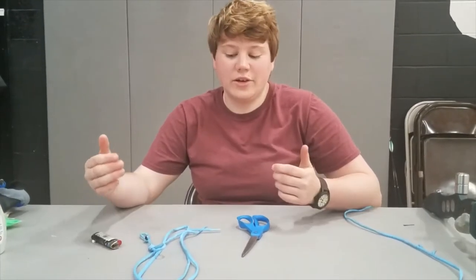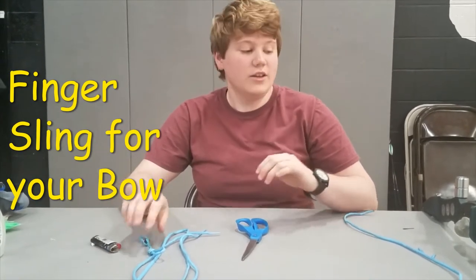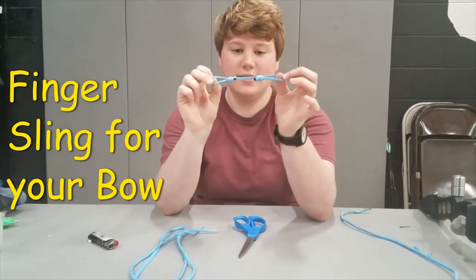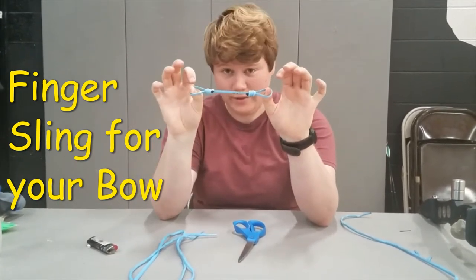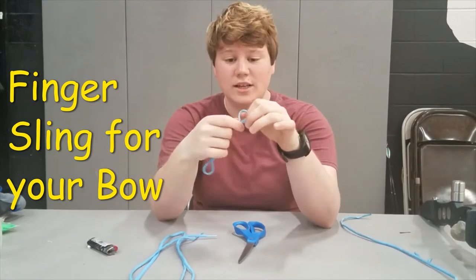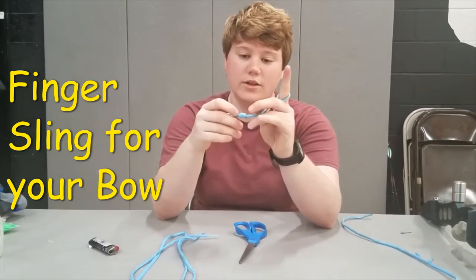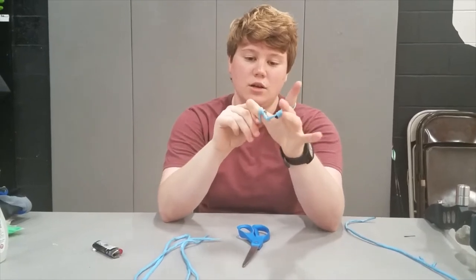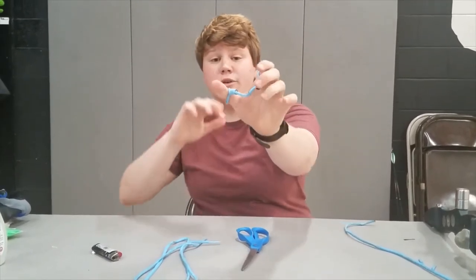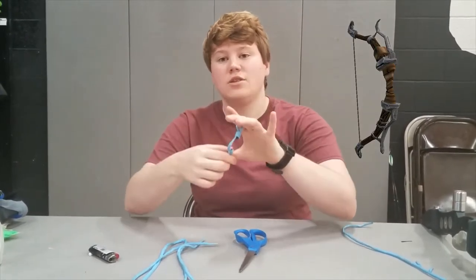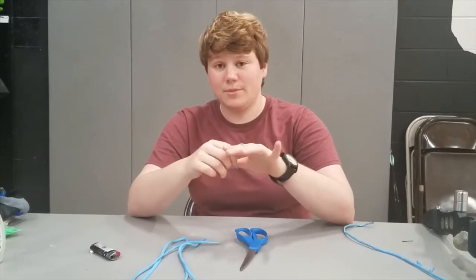Welcome back to Chapel Hill Parks and Rec. Today we're going to be showing you how to make a finger sling. So what a finger sling looks like this. This is going to be basically our finished product today and what it does is in archery you can put it on your finger so that way when you are shooting you don't have to hold tightly onto the bow, it will come out and catch in the finger sling. So that's its purpose.